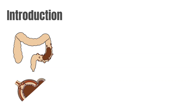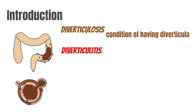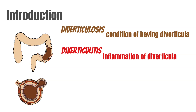So introduction — it's a gastrointestinal disorder involving inflammation of diverticula. What are diverticula? Outpouchings of the colon — these small little outpouchings that happen in the colon. There's a difference between the two terms: diverticulosis is a condition of having diverticula, and diverticulitis is inflammation of these diverticula. Together, these two terms make up diverticular disease.